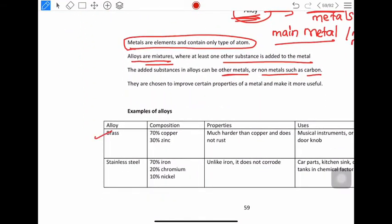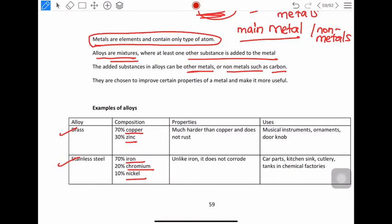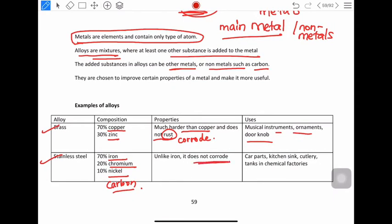You have two examples of alloys given here. Brass is made up of copper and zinc. Stainless steel is made up of iron, chromium, nickel. You can have some amount of carbon which is also present. Brass is much harder than copper and it does not corrode. For example, musical instruments, ornaments, doorknobs. Stainless steel does not corrode and it's used for car parts, kitchen utensils, sinks, cutlery, and tanks in chemical factories.